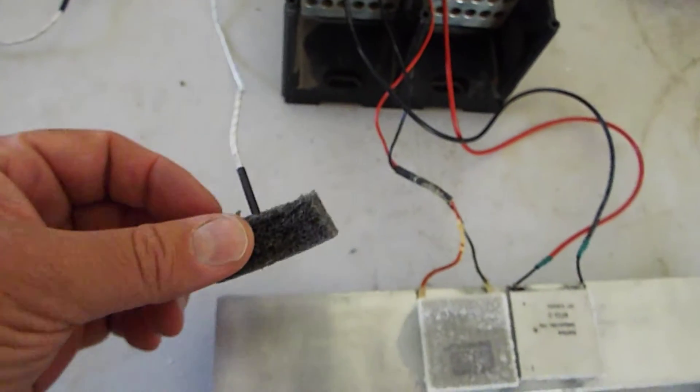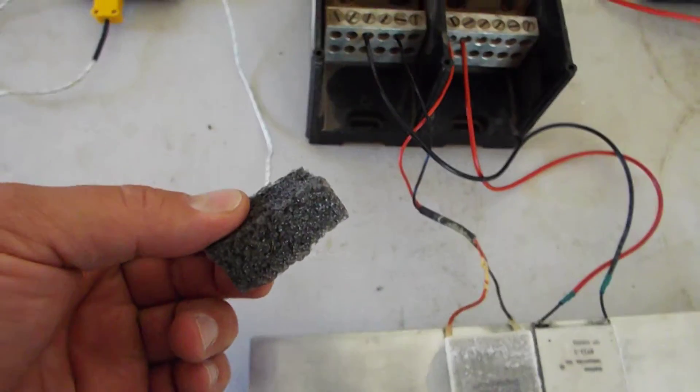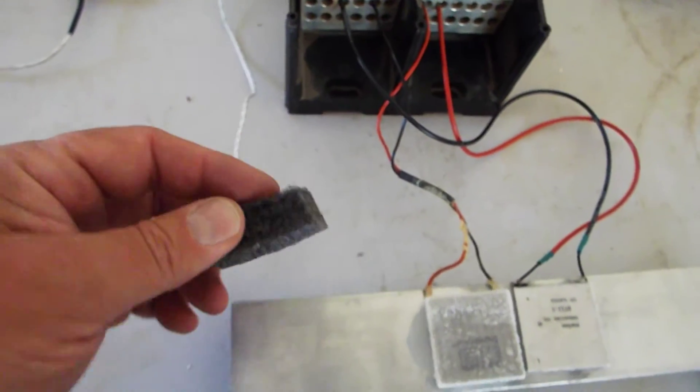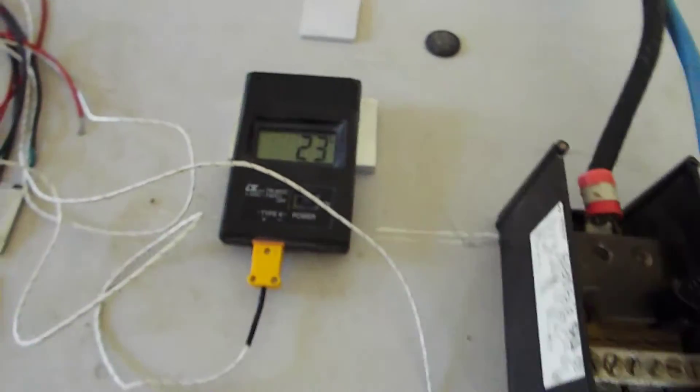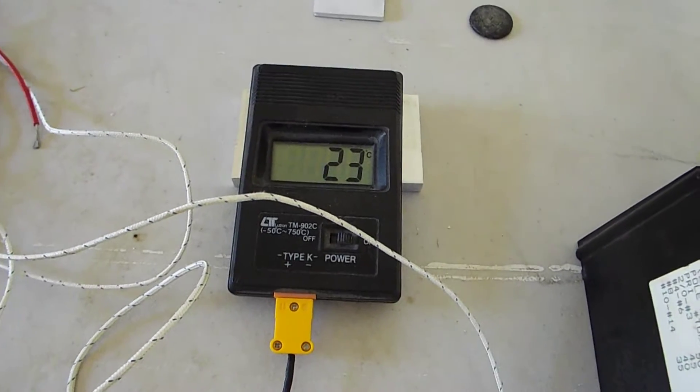I have this piece of foam that's insulating my fingers from the thermocouple so it won't interfere with the measurement. I'm going to press the thermocouple down against the water block and see what the temperature is.